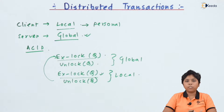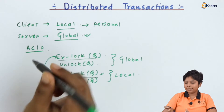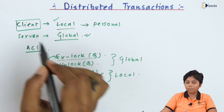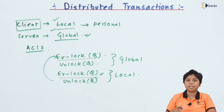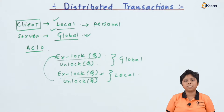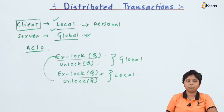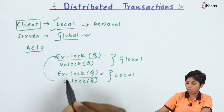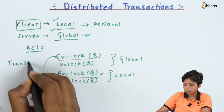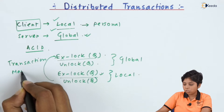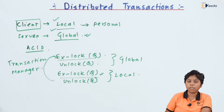For a site, a transaction is local when it is updating a local database, and it becomes a global transaction when it tries to update a database stored on a distributed or remote machine. There are two types of components: a transaction manager and a transaction coordinator. The transaction manager handles exclusive locking and unlocking for both global and local transactions, deciding which transactions get priority and which must wait.